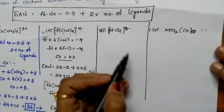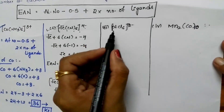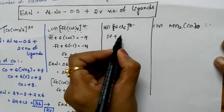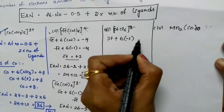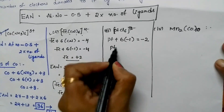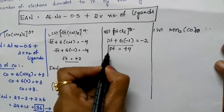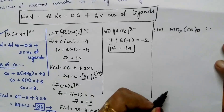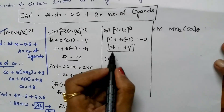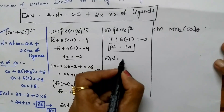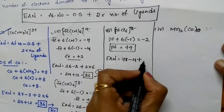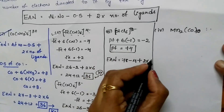Third example — solving more examples gives more clarity. For PtCl6²⁻: Pt + 6×(−1) = −2, so platinum's oxidation state is +4. Substituting into the EAN formula: atomic number of platinum is 78, minus oxidation state 4, plus 2 times number of ligands 6.